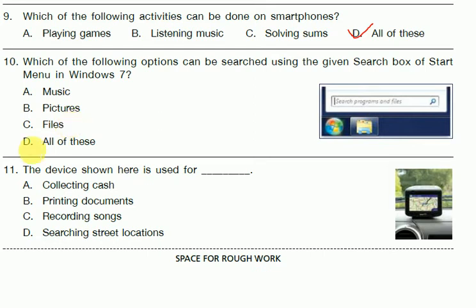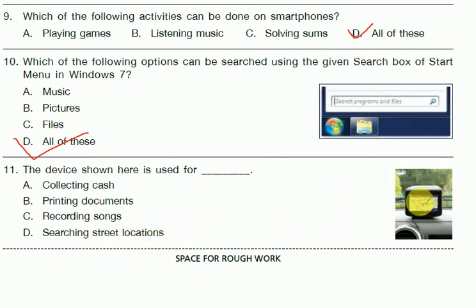Question 11: The device shown here is used for — collecting data, printing documents, recording sound, or searching street locations? The answer is searching street location. Question 12: This is question number 12.